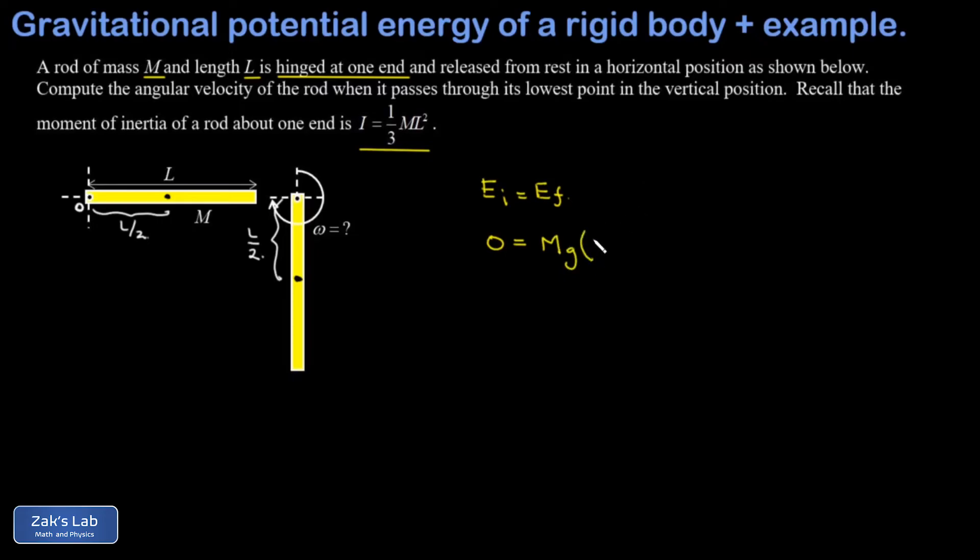And I have kinetic energy in the rod and that's going to be a one-half I omega squared where I is given by this formula one-third ML squared. So I'll go ahead and put that gravitational potential energy term over on the left and I have an MgL over 2, and then on the right I have one half times the moment of inertia which is one-third ML squared multiplying omega squared.